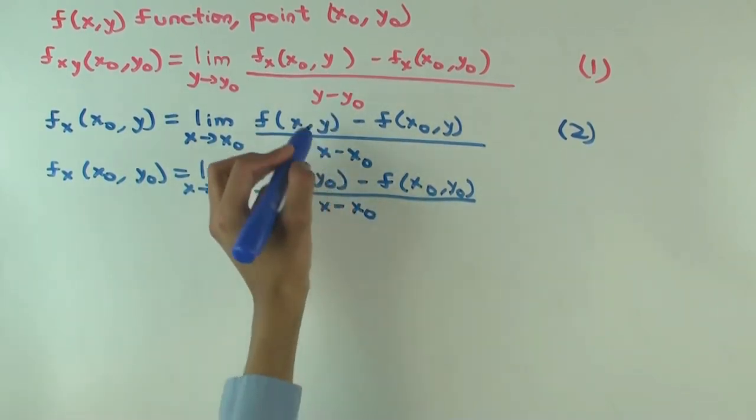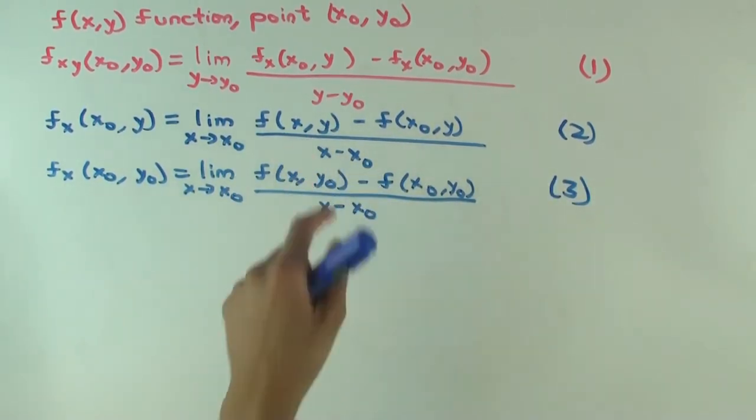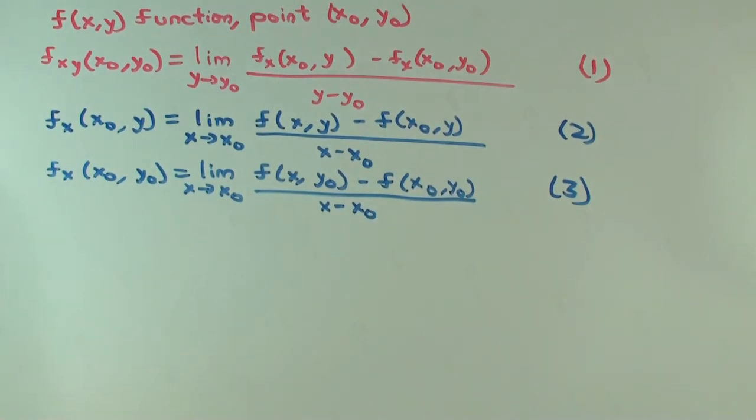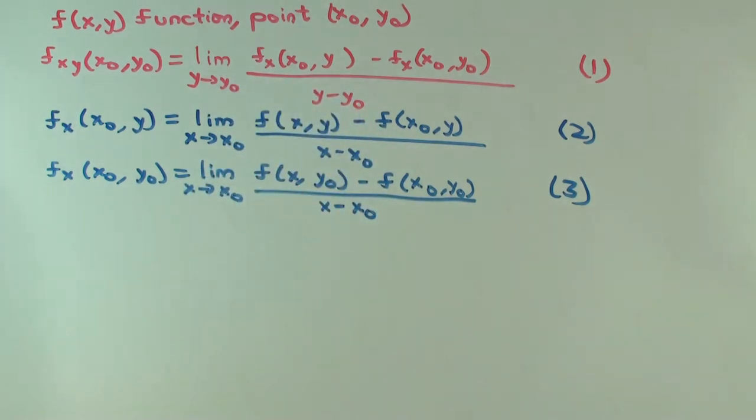So equations 2 and 3 are the same except you have y0 in equation 3 and you have y in equation 2. This y is just something which is close to y0. Now we need to plug 2 and 3 into 1.